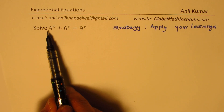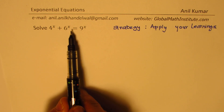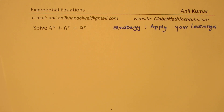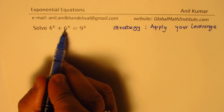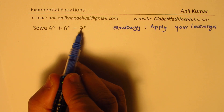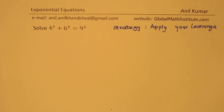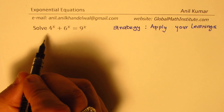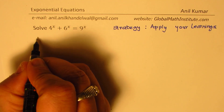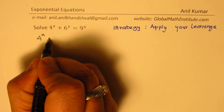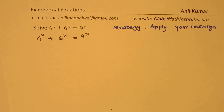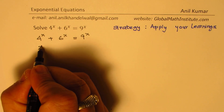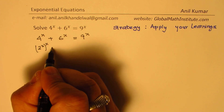First, we observe the equation: 4^x + 6^x = 9^x. We have different bases, however we do have 2 and 3. So 4 can be written as 2 squared, 6 can be written as 2 times 3, and 9 can be written as 3 squared. We can write this equation in terms of 2's and 3's. Let's begin by copying the equation: 4^x + 6^x = 9^x.